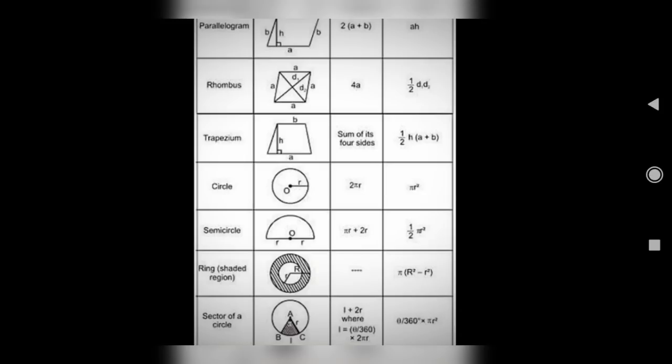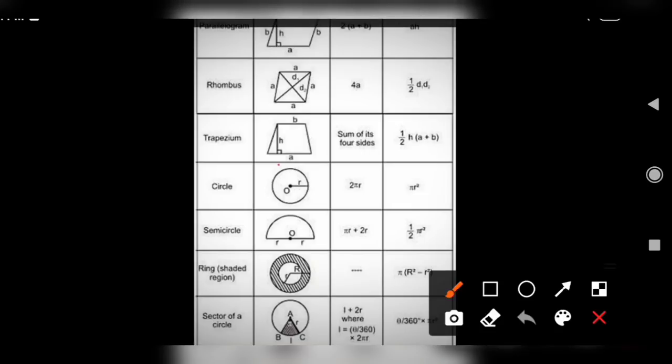Trapezium: perimeter is sum of its four sides. Area is half into height into sum of the parallel sides, that is A plus B.